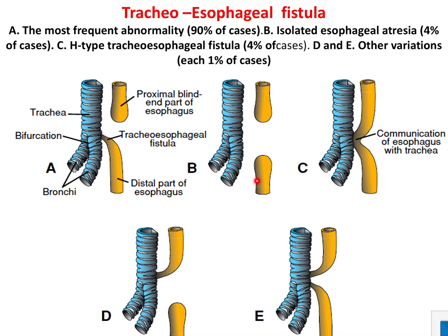In the second type, both ends of the esophagus are blind. In the third type, both the upper and lower parts of the esophagus are communicating with the trachea, forming an H shape — they communicate by a common opening with the trachea. So this third type is also called the H-type of tracheoesophageal fistula.